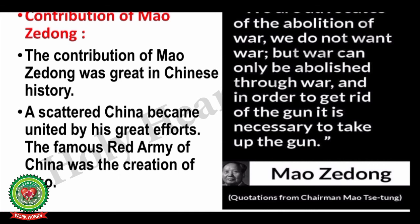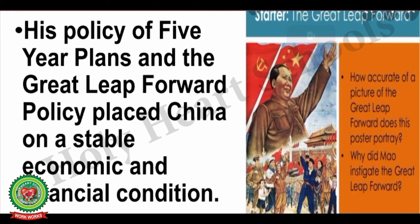Lastly, let us discuss the contribution of Mao Zedong towards decolonization of China. His contribution was great in Chinese history — a scattered China became united by his great efforts. The famous Red Army of China was his creation. His policy of Five Year Plan and the Great Leap Forward placed China on a stable economic and financial condition. Through the Five Year Plan he gave importance to both agricultural and industrial sectors; through the Great Leap Forward he gave people authority to rule themselves at the local level and started collectivization of agriculture on a small scale.